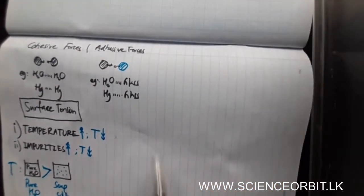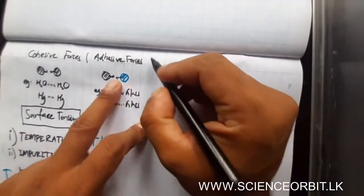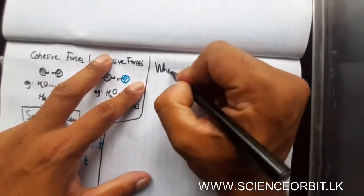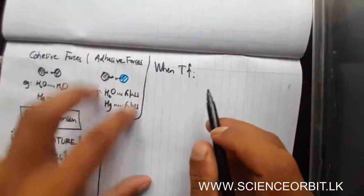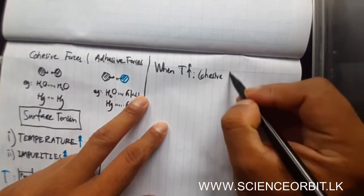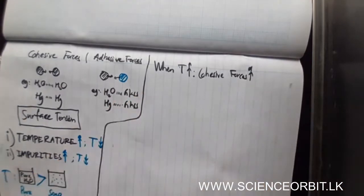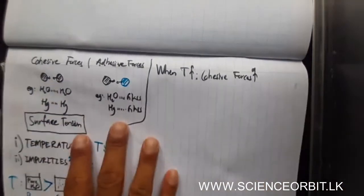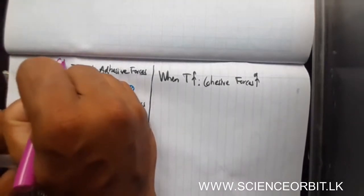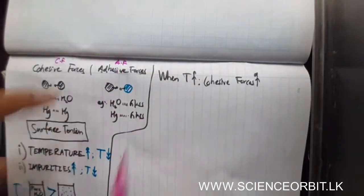Now let us discuss some other aspects about surface tension. When surface tension is high, cohesive force will be more dominant. I will use CF for cohesive forces and AF for adhesive forces to save time. When you take a wooden surface and pour water, water wets the wooden surface more.